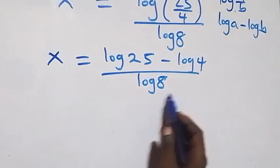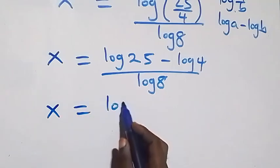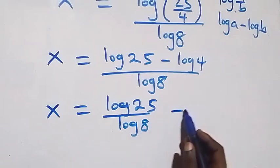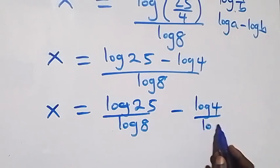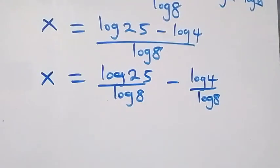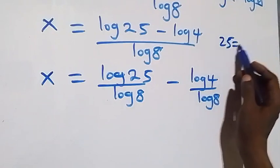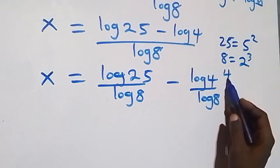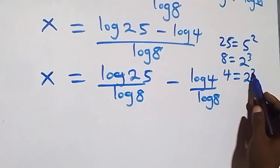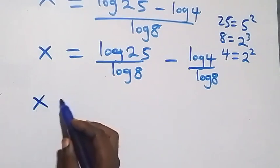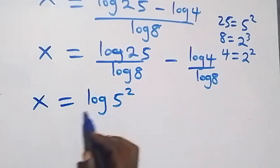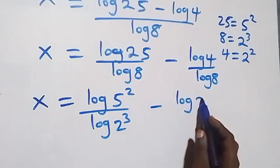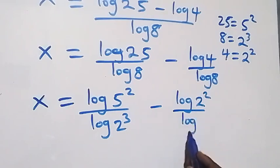We separate this into two fractions: x equals log 25 over log 8, minus log 4 over log 8. Then we express 25 as 5 squared, 8 as 2 raised to power 3, and 4 as 2 squared. So x equals log(5²) over log(2³), minus log(2²) over log(2³).